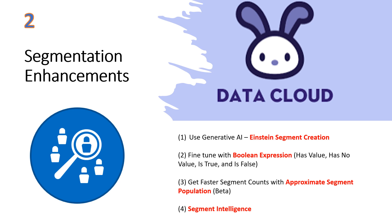There are some important Data Cloud segmentation enhancements. It's now possible to fine-tune segmentation using Boolean expressions, such as Is True and Is False. And when building a segment, you can get a quick estimate of the population count to validate your segment rules by using the new Approximate Segment Population field to confirm that the segment count meets your expectations.